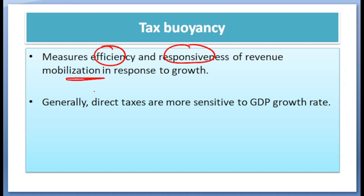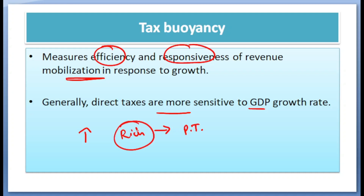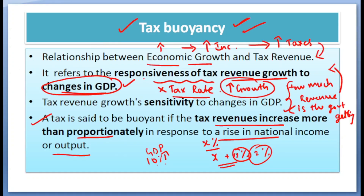Generally, it is said that direct taxes are more sensitive to GDP growth because when there is high growth, the rich people get comparatively more income, so they also fall in the higher tax bracket because of progressive taxation. The taxes that these rich people pay to the government would also comparatively and proportionately increase compared to earlier levels of income. This is about tax buoyancy — without changing the tax rate, how much more tax revenue the government generates.